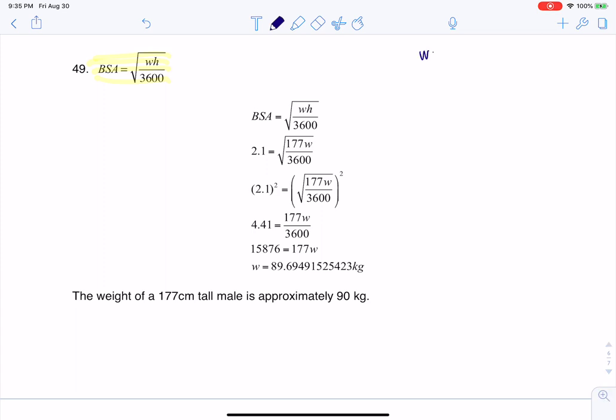They tell us that the w is the variable of weight, and I should say specifically weight in kilograms. And then they tell you that the h variable represents height, and the units for that variable are centimeters.